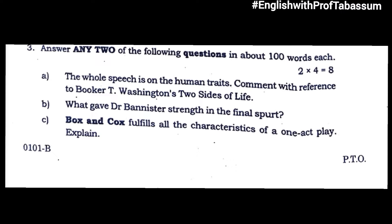Answer any two of the following questions in about 100 words each. 'The whole speech is on the human traits — comment with reference to Booker T. Washington's Two Sides of Life.' 'What gave Dr. Bannister strength in the final spurt?' — this is from 'The First Four Minutes.' 'Box and Cox fulfills all the characteristics of a one act play' — this is from the prose lesson 'Box and Cox.'